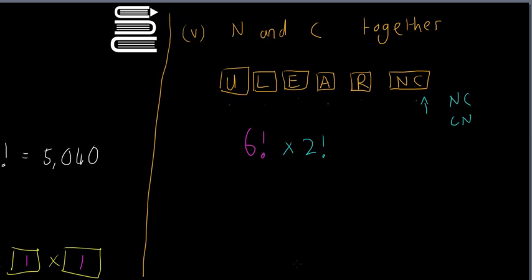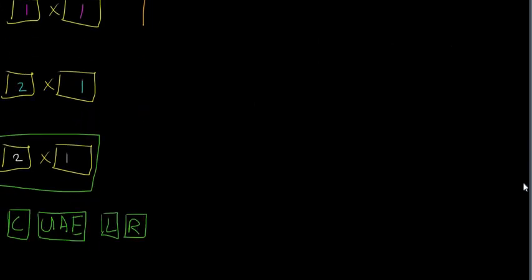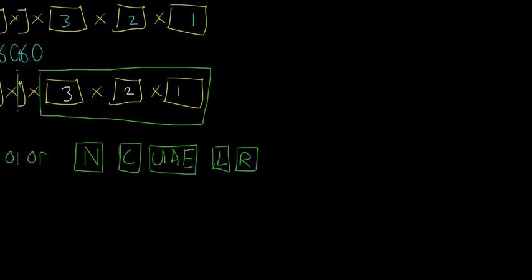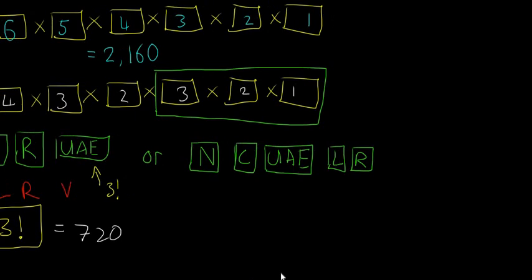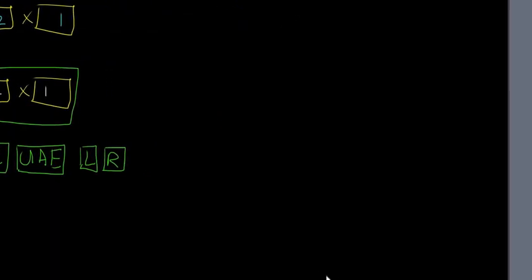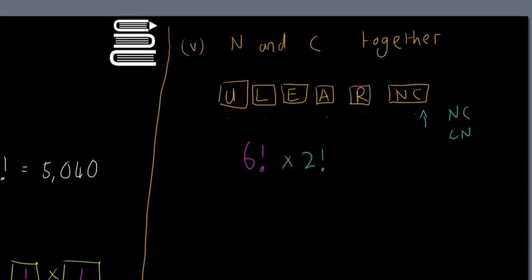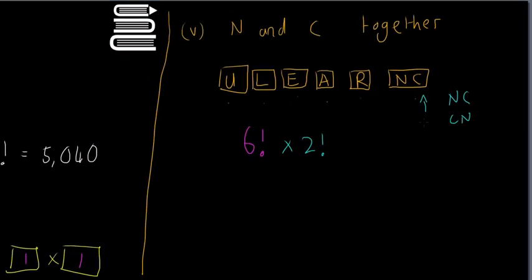It's the same logic as the vowels-together question. Six factorial times two factorial gives an answer of 1,440 different arrangements when N and C are together.